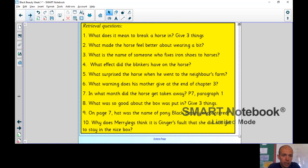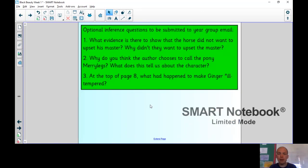Okay. We're going to do some optional inference questions as well. Remember, you don't have to do that, but you can submit them to the group. So question one, what evidence is there to show that the horse did not want to upset his master? Why didn't they want to upset the master? Why do you think the author chooses to call the pony merrylegs? What does this tell us about that particular character? We did a bit of that on World Book Day, how authors carefully choose the names of certain characters. And finally, number three, at the top of page eight, what had happened to make Ginger ill-tempered?